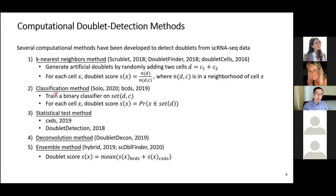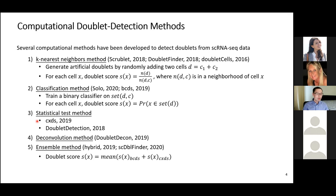The second category is classification methods. This approach also generates artificial doublets, merges them with the original dataset, and trains a binary classifier on the merged data to differentiate original cells from artificial doublets. The predicted probability of being a doublet is used as the doublet score — a higher score means you are more likely to have a real doublet. There are also three other categories: statistical test methods, deconvolutional methods, and ensemble methods.